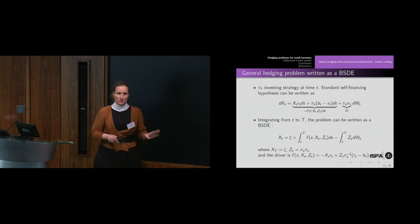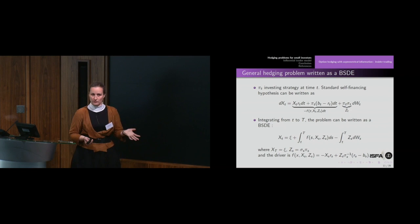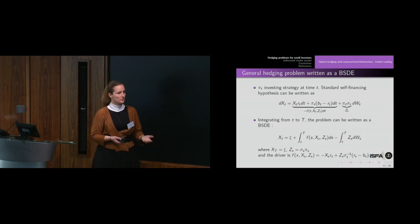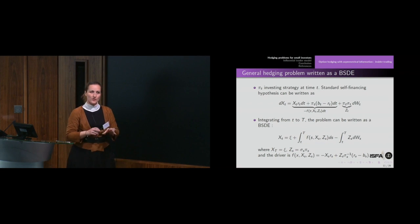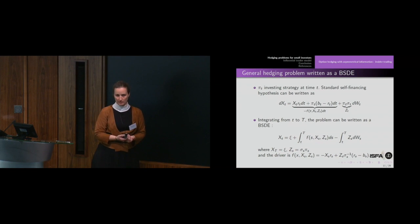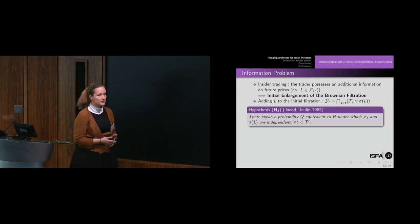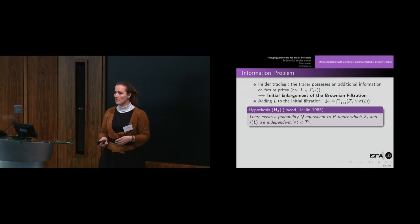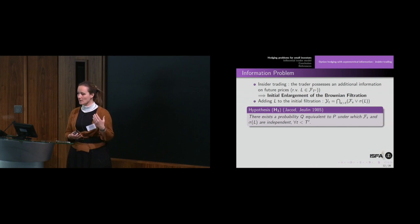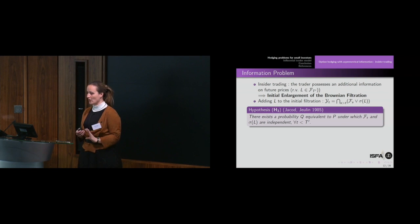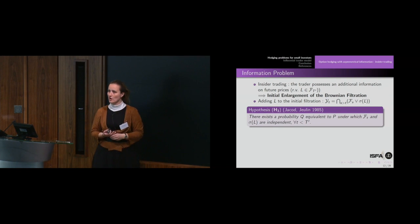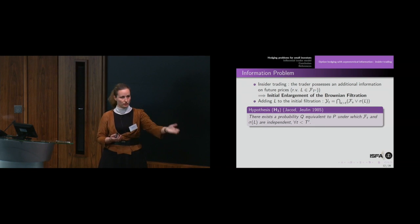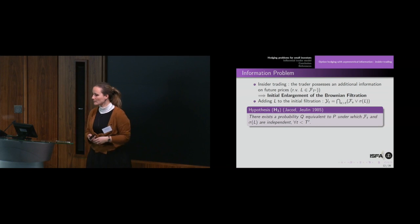What we have to solve is a backward stochastic differential equation. Our agent has additional information, so we will have to solve this BSDE within a framework where the filtration and information is not the standard one. How do we model the insider problem? We consider here initial enlargement of the Brownian filtration: additional information seen as a random variable known from the beginning.